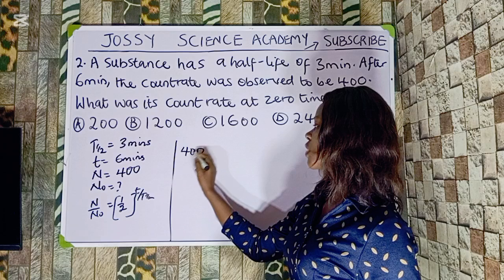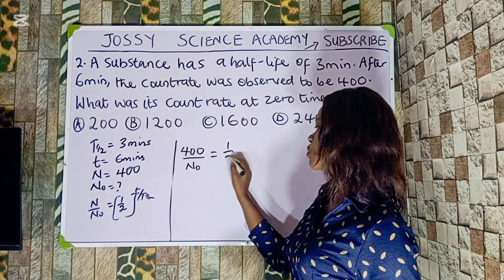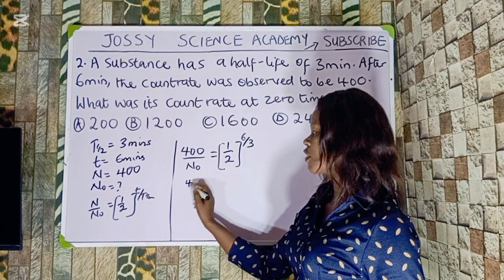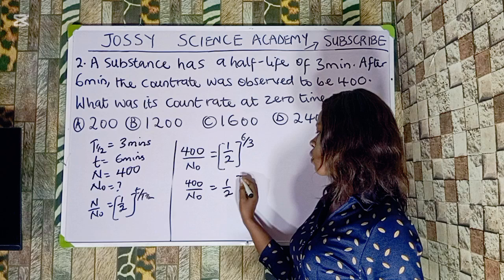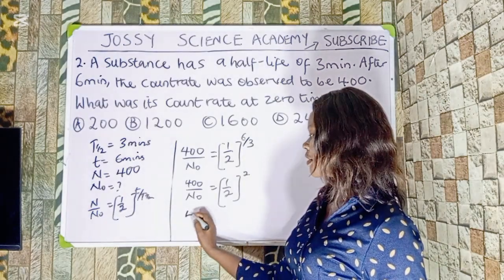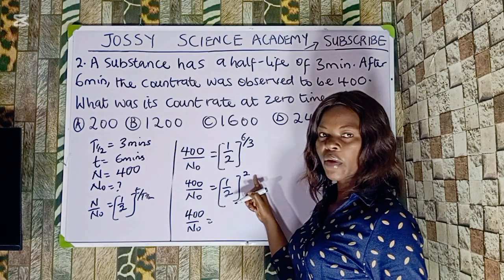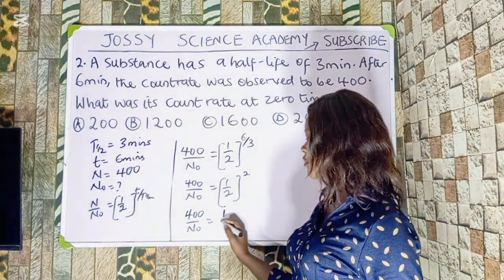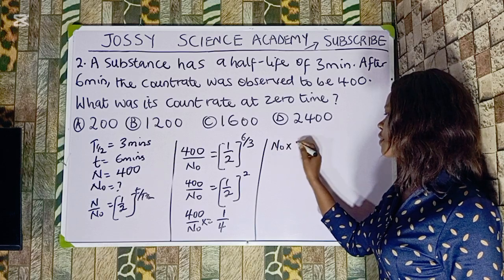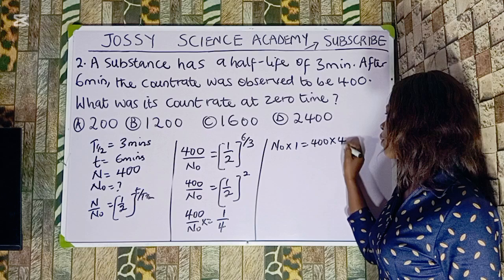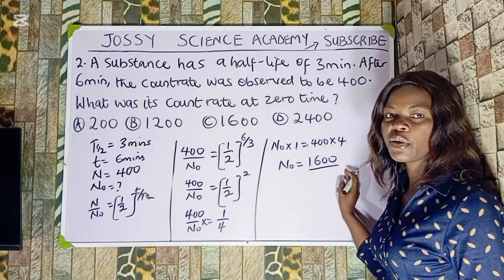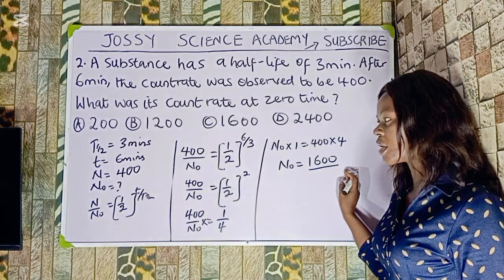Substituting: 400 over N0 equals 1 over 2 raised to the power of 6 over 3. Since 6 divided by 3 is 2, we get 400 over N0 equals 1 over 4. Cross-multiplying: N0 times 1 equals 400 times 4, so N0 equals 1,600. The original count rate at zero time is 1,600. The correct option is option C.